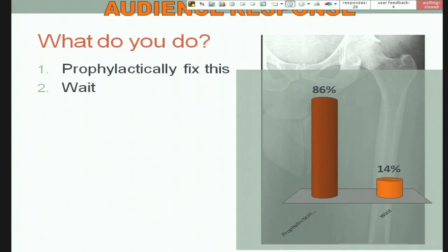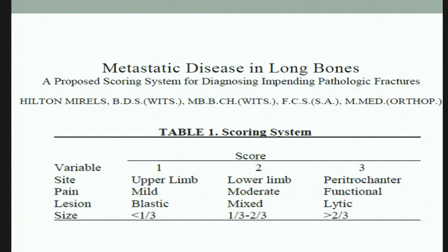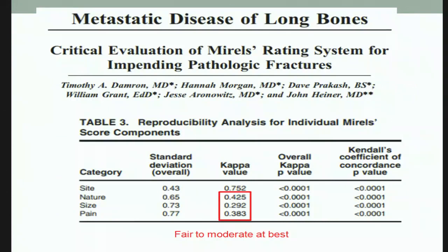The best guideline we have right now is Mirels' criteria on when to fix. I want to be clear that Mirels' criteria should be used as a guideline, not biblical scripture. When you critically evaluate Mirels' rating system for pathologic fracture, the site — identifying where the lesion is — has the best intra-observer reliability. Outside of that, it's fair to moderate at best. The nature of the lesion, the size is even worse, and pain is not great either. So yes, it's a guide, but you've got to use it in the context of each individual patient.